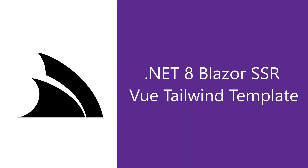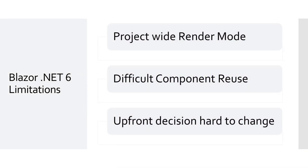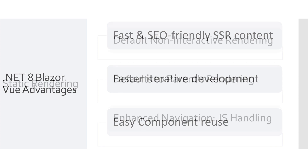In previous versions of Blazor, developers had to make a crucial upfront decision to use either Blazor WebAssembly or Blazor Server. This choice had significant implications: with WebAssembly it relies heavily on client-side resources, whereas Server faces challenges in high latency environments. However, in Blazor for .NET 8 it marks a significant shift in this approach.